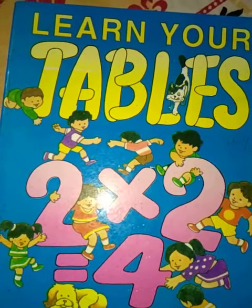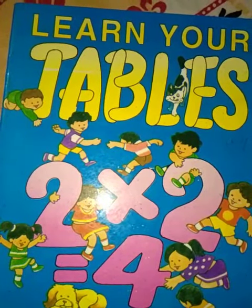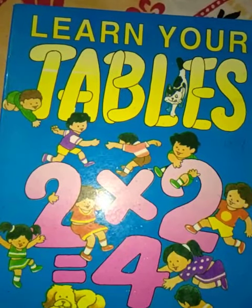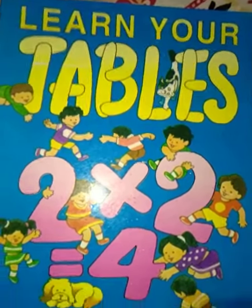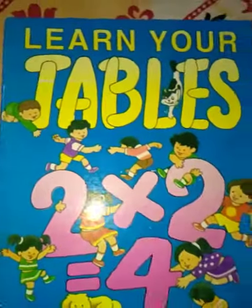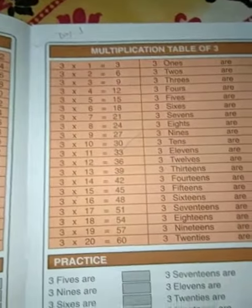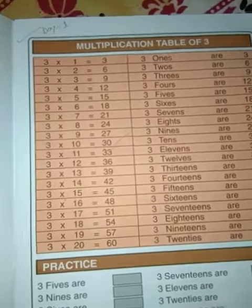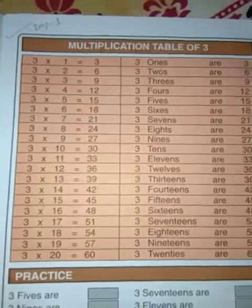Today we start the Term 2 exam syllabus — this is your FA3 and FA4 exam syllabus chapter. Today I'll take your tables book, so open your book. You can see I open the chapter, and our chapter name is Table Number — the Table of Three.